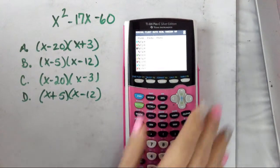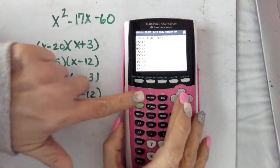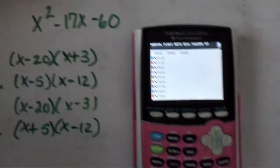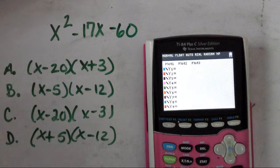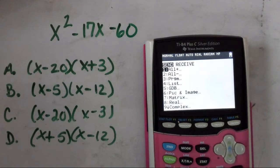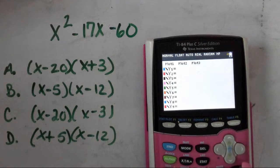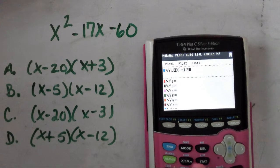We're going to go to Y equals. Let me zoom this in. Alright, and we're going to plug in that first one. We're going to put in x squared— oh no, we're not. Hold on. We're going to go to Y equals: x squared minus 17x minus 60.